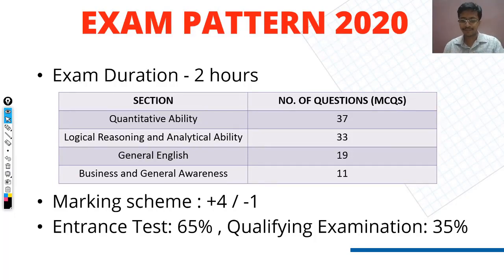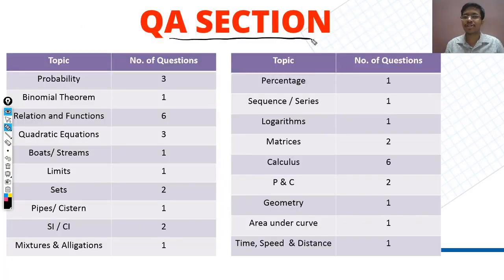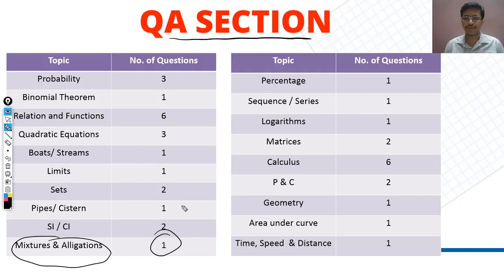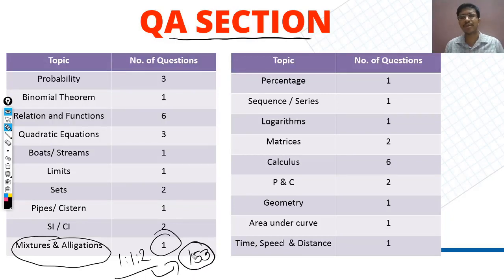Now let us start with the QA section. In QA, there were 37 questions. Previous year questions were repeated — the mixture and allegation question that you have seen in the previous year question series on the channel. The same values and the same figure were repeated, where you had to keep 3 quantities in ratio, and a mixture priced at Rs. 153 was made.